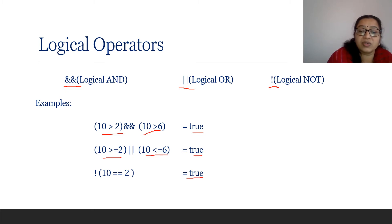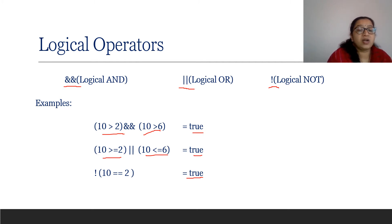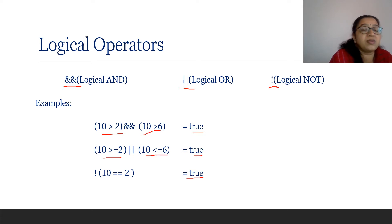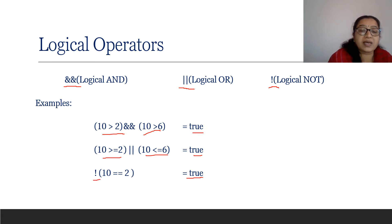For NOT, we used only one operand — one expression. So we can call the NOT operator a unary operator. AND and OR are binary operators because two operands are needed. NOT is a unary operator because only one operand is needed.